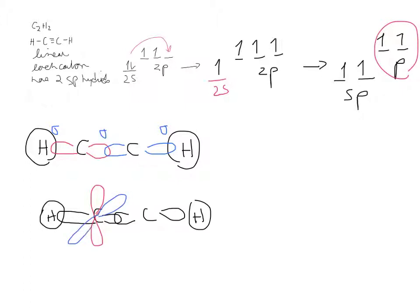here's the other, and the other carbon, and the other. Then you're going to get sideways overlap to form pi, and sideways overlap to form pi. So you have one sigma and two pi associated with the triple bond.